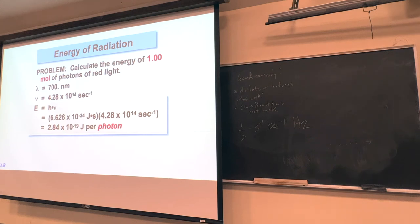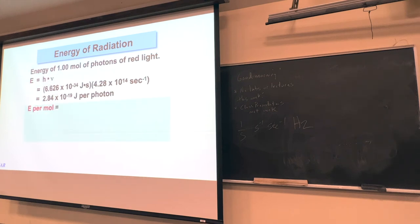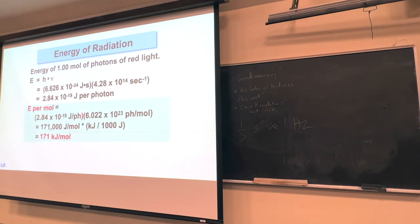Using E = hν: Planck's constant 6.626 × 10⁻³⁴ times the frequency 4.28 × 10¹⁴ gives 2.84 × 10⁻¹⁹ joules per photon. Is that a big or small amount of energy? Very small — 10⁻¹⁹ joules. Me waving my finger uses more energy than that. But we're not done: just like we think about atoms in moles, it's more helpful to think about light per mole of photons. We take joules per photon and multiply by Avogadro's number to convert to joules per mole.